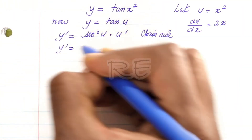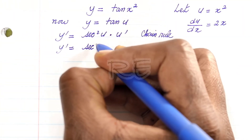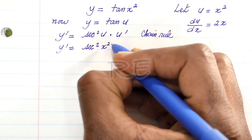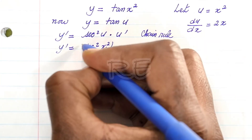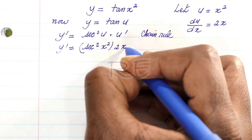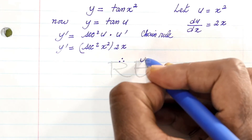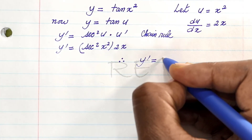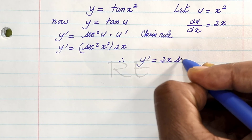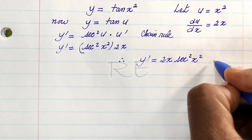Y prime will be — substituting back — secant squared x squared times 2x, which can be written as y prime equal to 2x times secant squared x squared.